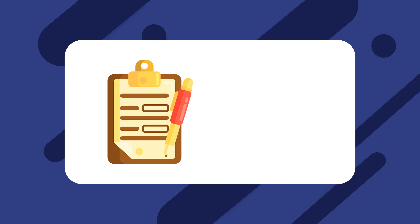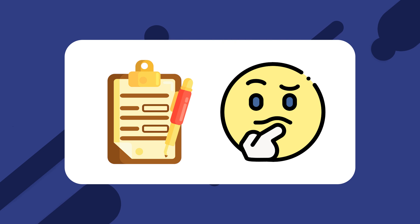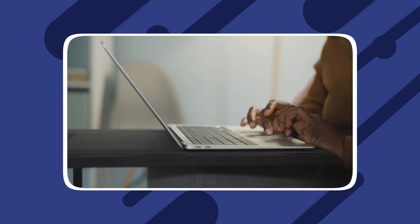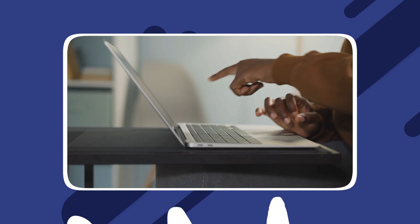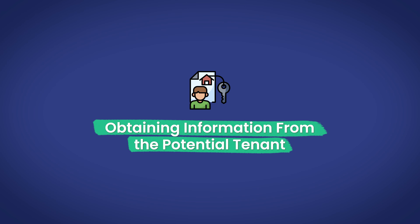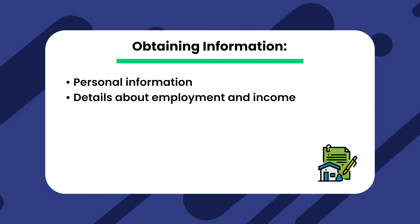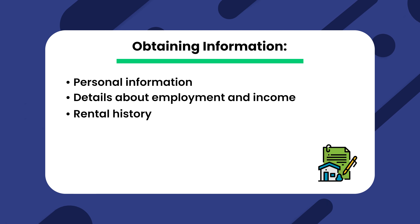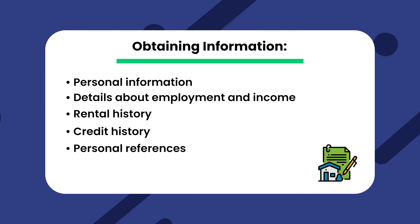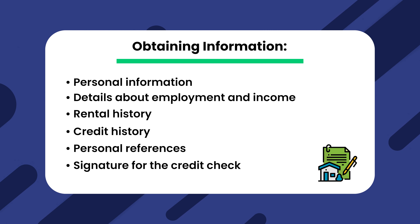What exactly should you include in your Alabama Rental Application Form? The purpose of a rental application form is to gather information about the applicant and provide certain disclosures related to rules and the property's condition. This includes personal information, details about employment and income, rental history, credit history, personal references, and the signature granting you, the landlord, permission to conduct a credit check.